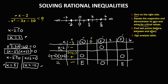For the test point x equals 0: x minus 2 gives 0 minus 2, which is negative 2 — negative. For x minus 5: 0 minus 5 is negative 5 — negative. For x plus 2: 0 plus 2 is positive 2 — positive. Negative times positive is negative. Then negative divided by negative gives a positive result.